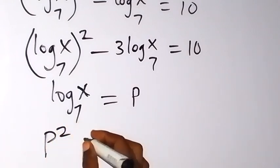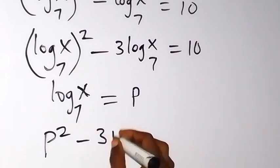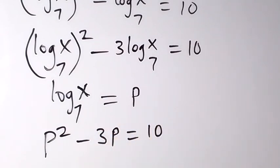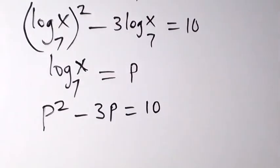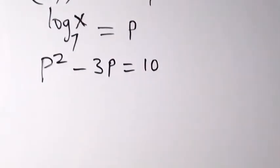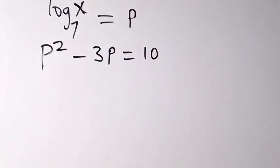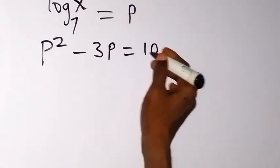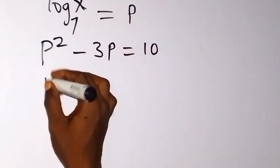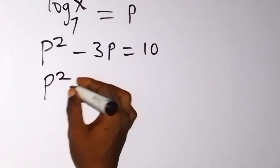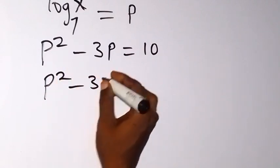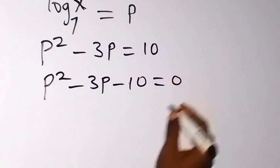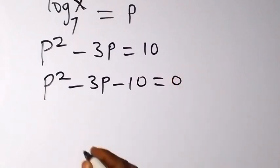We have p squared minus 3p equals 10. We can use this to form a quadratic equation. Bringing the 10 to the left side it becomes minus, so we have p² − 3p − 10 = 0. This is a quadratic equation.